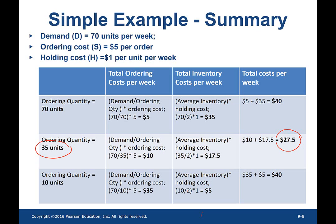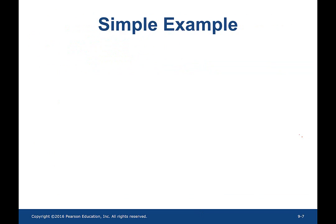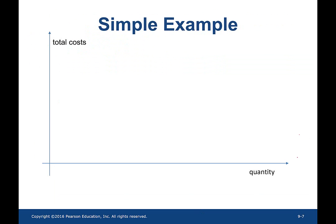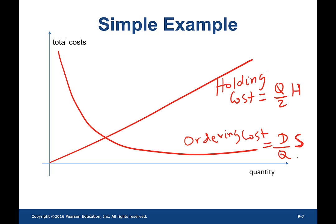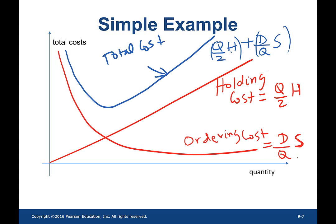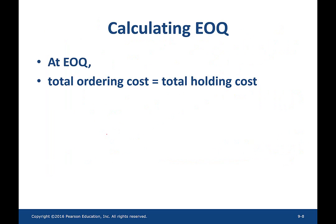Before we get into the mathematical equation, let's observe what is happening in this example. When the ordering quantity decreases from 70 to 10, the total ordering cost is increasing while the total inventory costs are decreasing. The total cost decreases for some portion of the ordering quantity and then increases for the rest. Representing all those costs on a graph — with quantity on the x-axis and total cost on the y-axis — as quantity increases the holding cost increases and ordering cost decreases. Adding these two costs gives the total cost, and the lowest total cost occurs when the holding cost is equal to the ordering cost. So at EOQ, total ordering cost equals total holding cost.